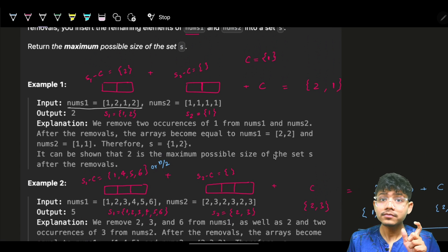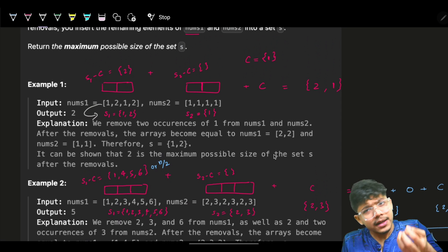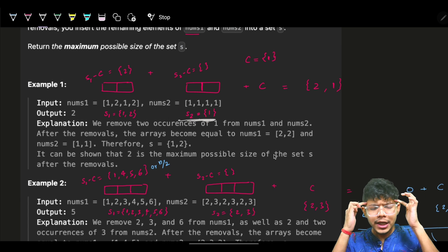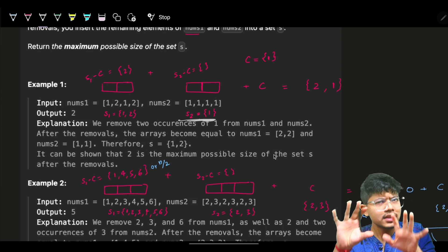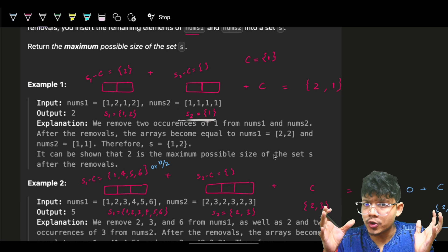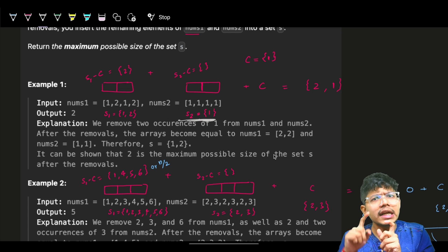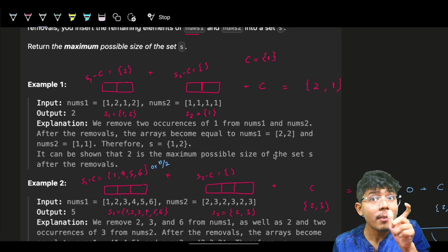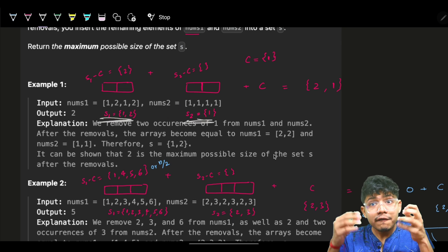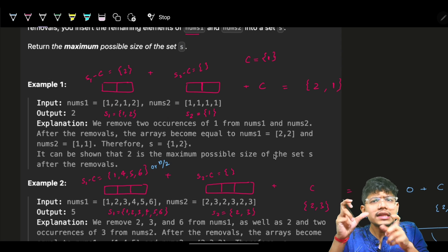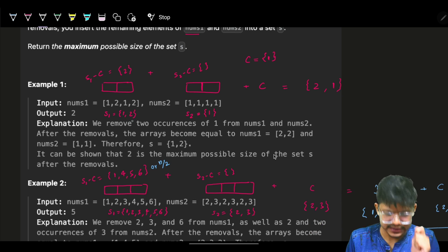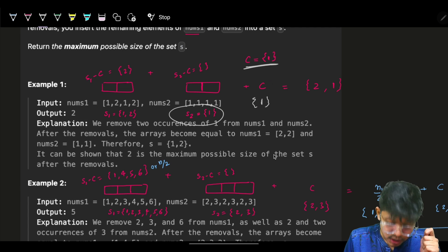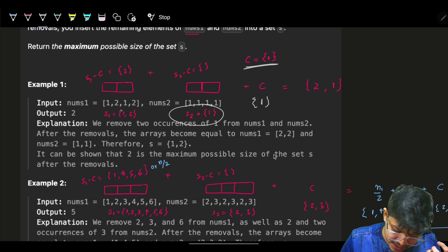The approach is: convert nums1 to a set s1 to grab unique elements. For example, unique elements of nums1 might be {1, 2}, and for nums2, s2 might be {1}. Since we'll be merging these two sets, common elements will appear as duplicates. So we can't just say the answer is s1.size + s2.size — we also need to find what's common between s1 and s2, since that common element will only be counted once.